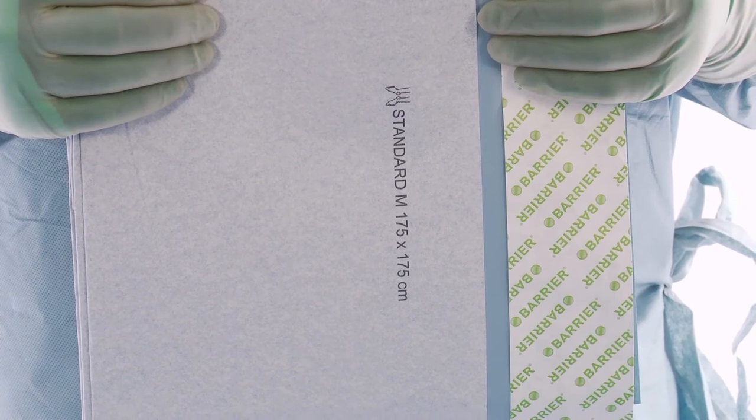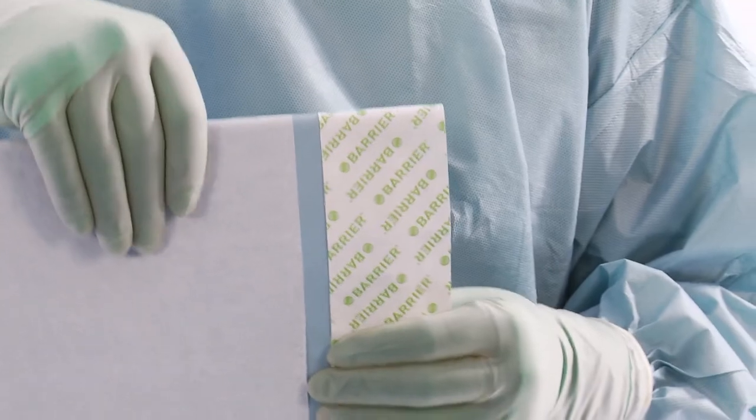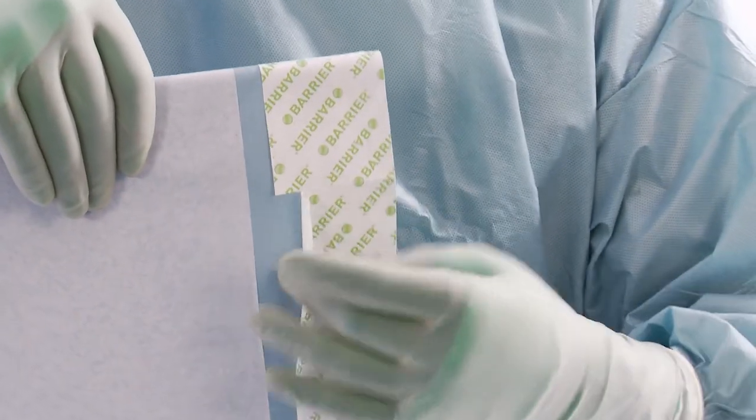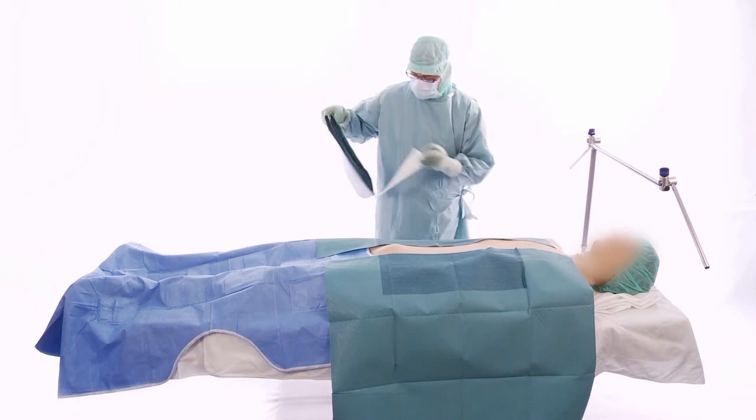Note the direction of the pictogram on the OP sheet. The OP sheet has three release papers for easy handling with perforation between the three. Remove the middle release paper first.